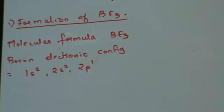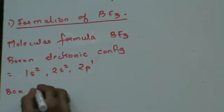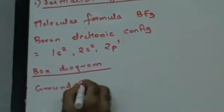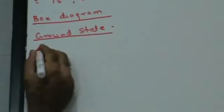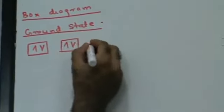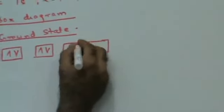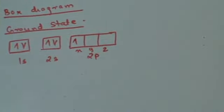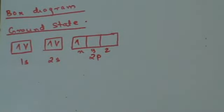Once you have the electronic configuration of Boron, let's see the box diagram. The ground state is going to be 1s2, 2s2, 2p1. Now, will Boron go into the excited state? Yes, it will go into the excited state. Why? Because it has an empty orbital. If a given atom has an empty orbital, it will go into the excited state.